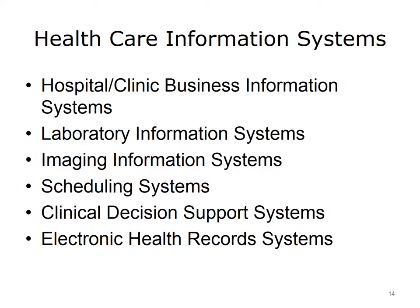Healthcare information systems are just another application of general information systems. Because hospitals and clinics are businesses, you will also find examples of traditional business information systems in healthcare settings. In addition to business systems, there are dozens of other types of information systems. Laboratory information systems record, analyze, and communicate data related to laboratory testing, such as urinalysis or blood draws. Imaging information systems manage image data, such as those from x-rays or magnetic resonance images, or MRIs. Scheduling systems provide support for scheduling patient appointments, doctors' and nurses' shifts, and resources such as operating rooms or equipment.